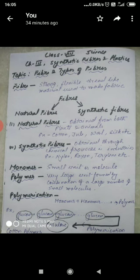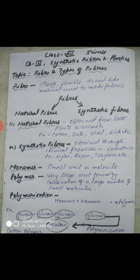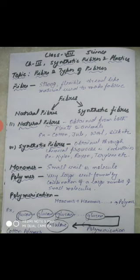What are the different categories of fiber? There are two types: natural fibers and synthetic or human-made fibers. Natural fibers are obtained from nature — from both plants and animals. For example, cotton fibers are obtained from the cotton plant, jute fibers from the jute plant, wool from sheep, and silk from cocoons. Together these are known as natural fibers.